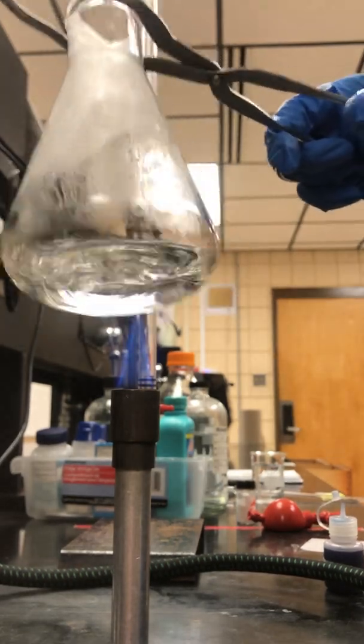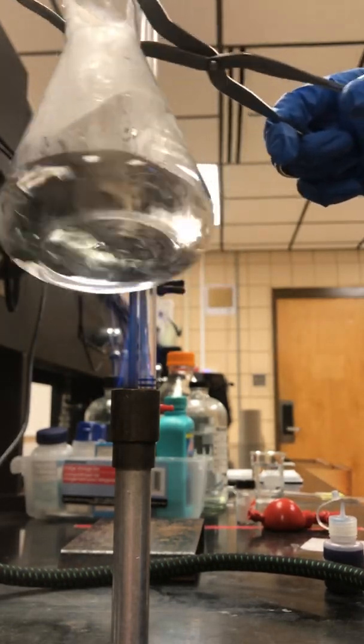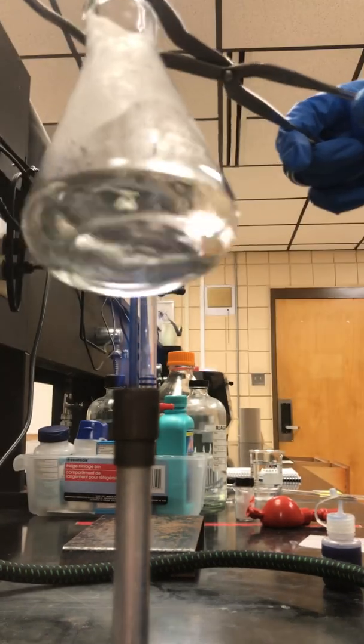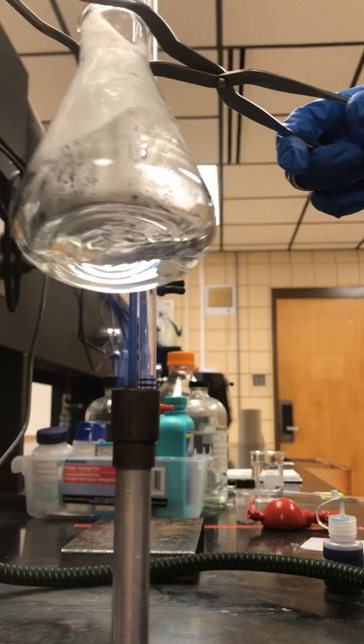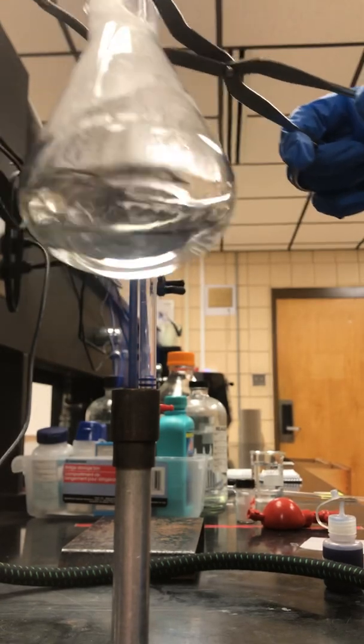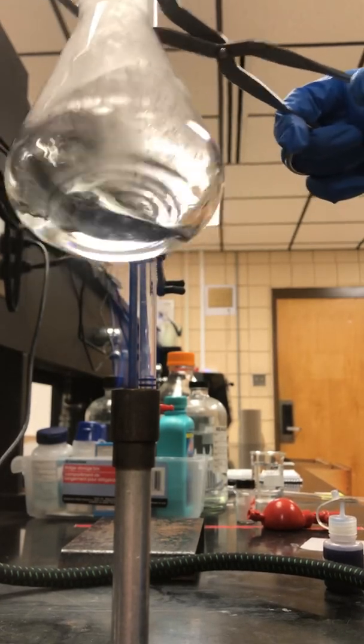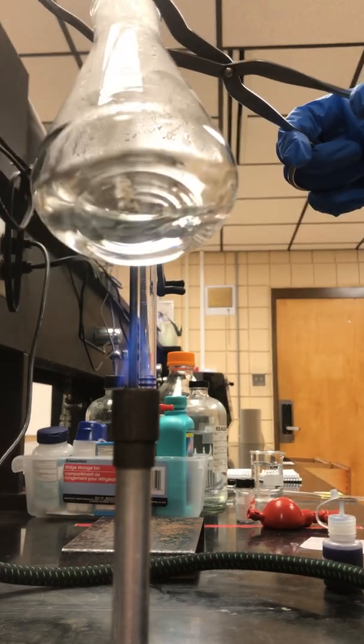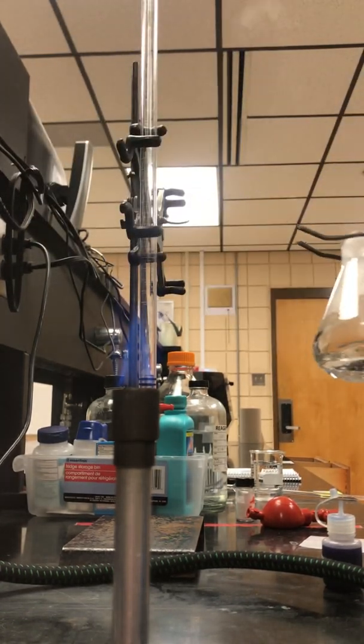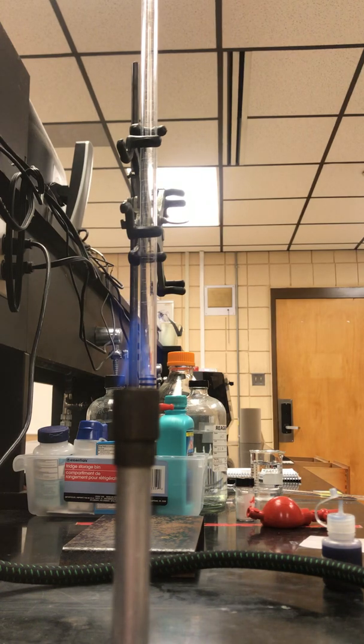Do this for approximately a minute. If you don't feel comfortable using the Bunsen burner or holding the flask with tongs, you could also use a hot plate and just sit it on a hot plate.